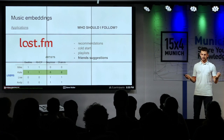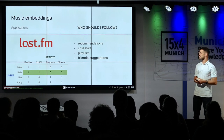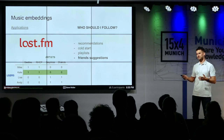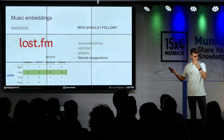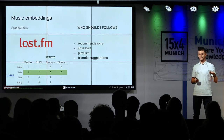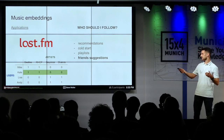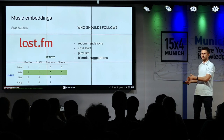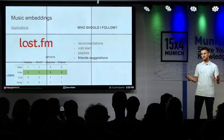Another application is friend suggestions. Last.fm does this for sure — it's when you're a user and you want to follow someone with similar interests. Looking back at our table, every row represents the embedding of an actual customer. So we take Kate's embedding, look for the most similar ones, suggest her to follow those people, and probably they would become friends.